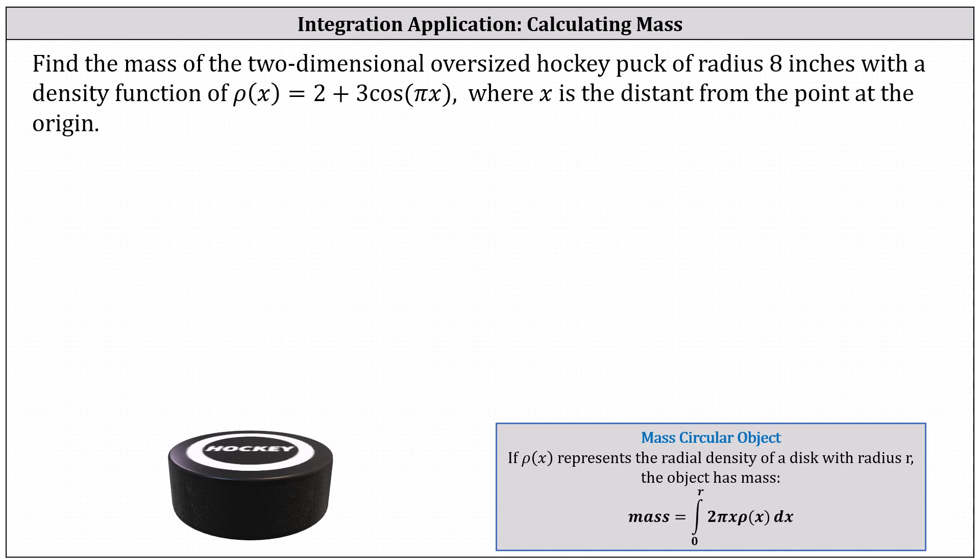If ρ(x) represents the radial density of a disk with radius r, the object has mass